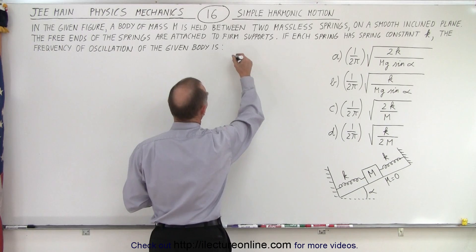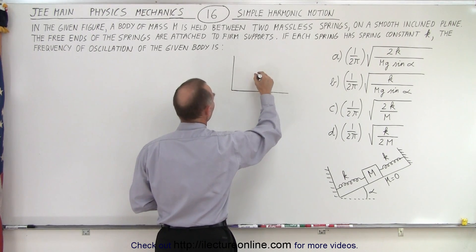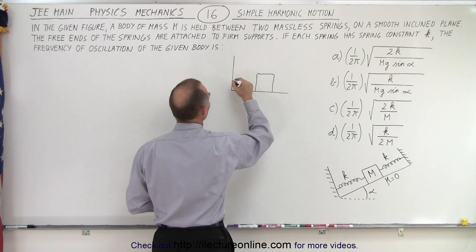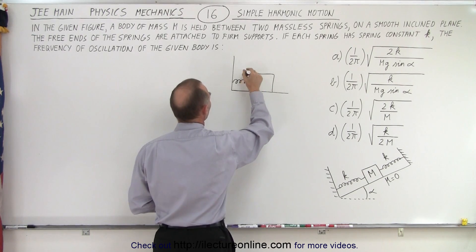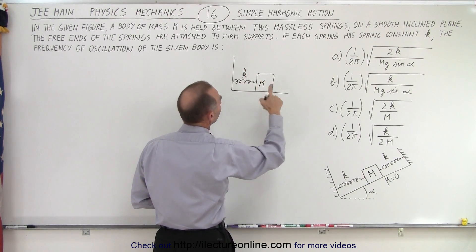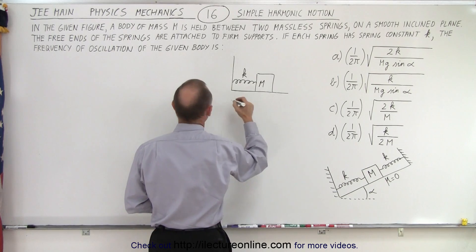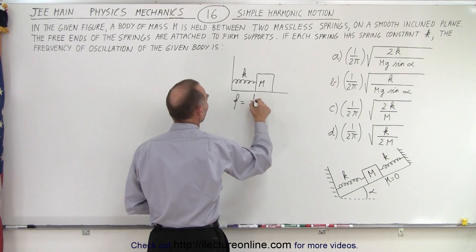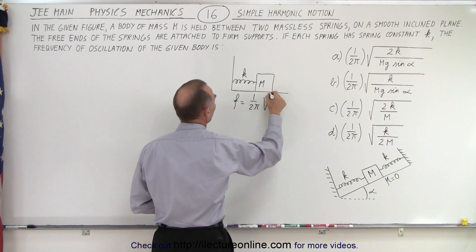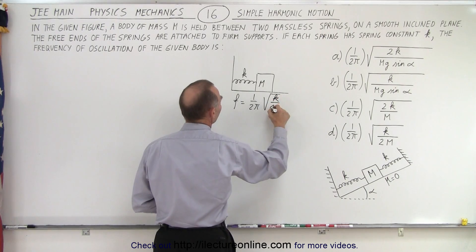Let's say we have a situation that looks like this, where we have a horizontal situation with a single spring. Spring constant K, mass M, and here, the frequency of oscillation F is going to be equal to 1 over 2π times the square root of K over M.